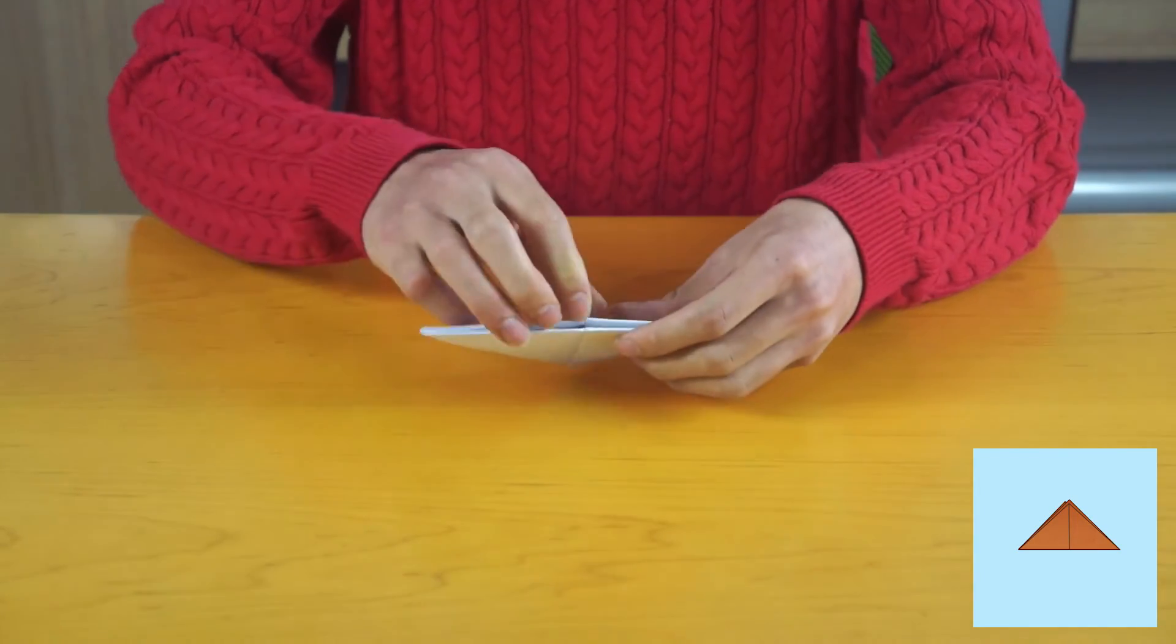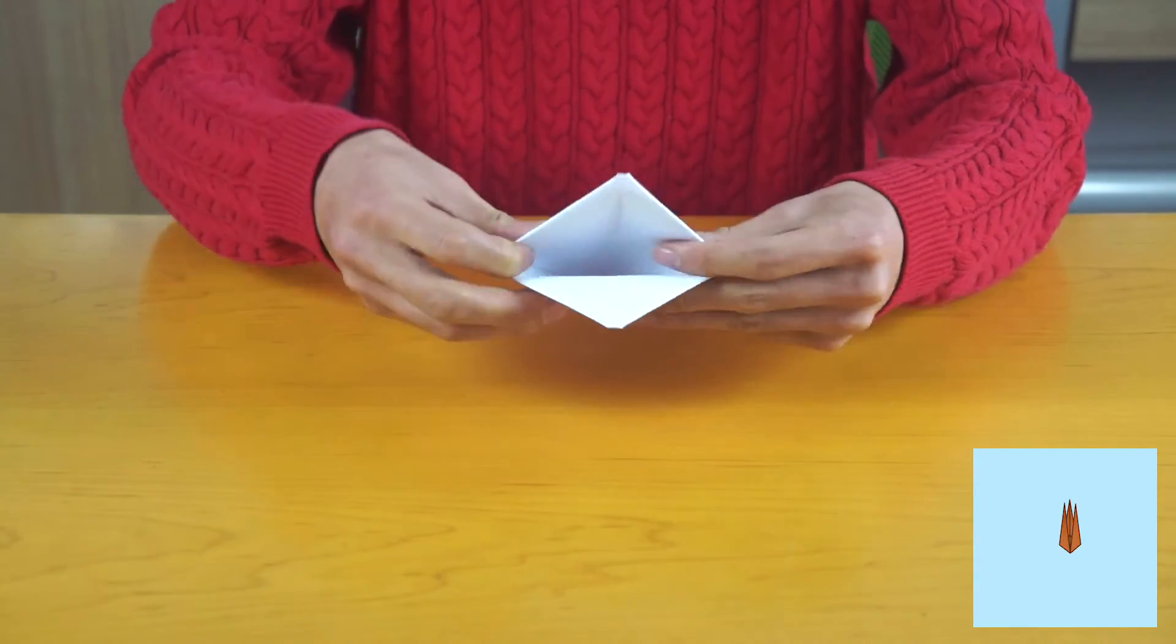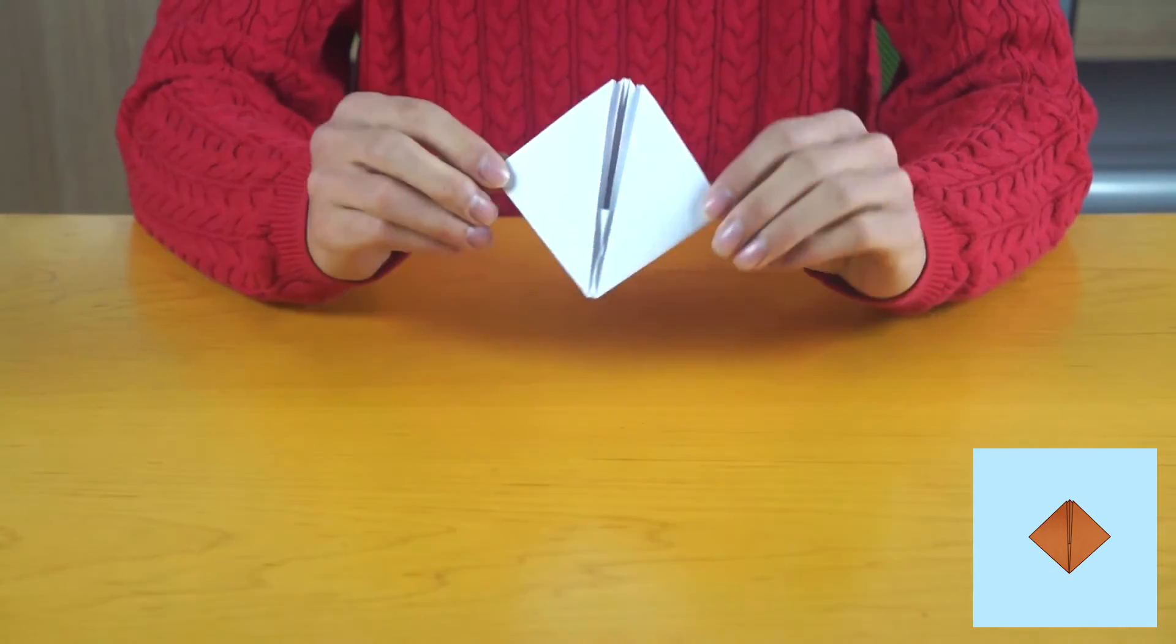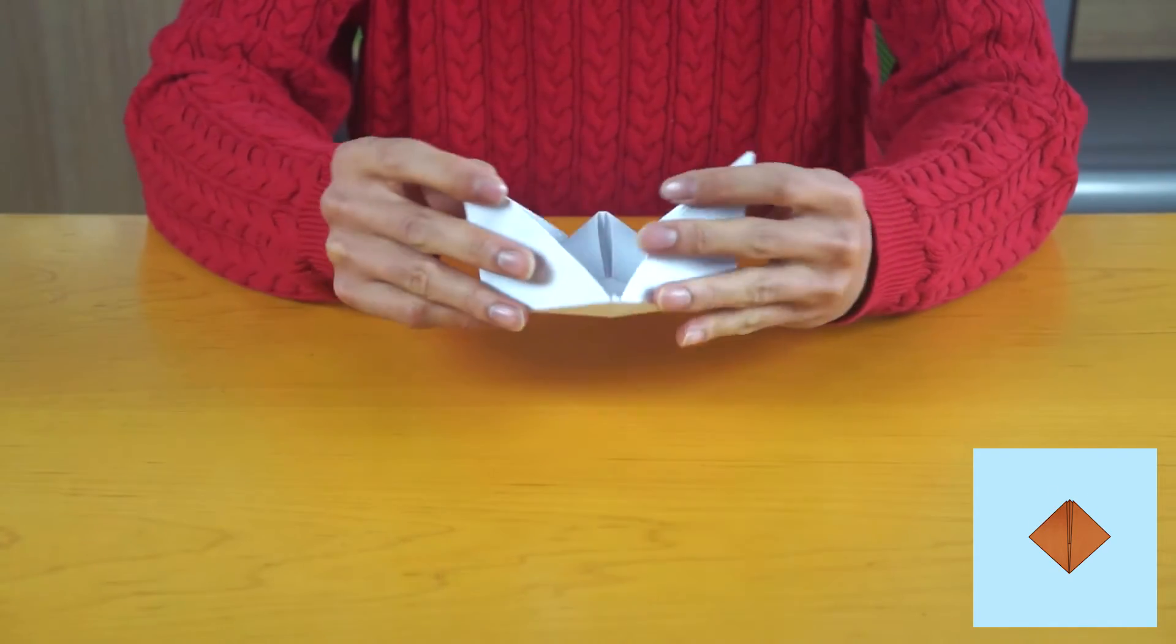Put thumbs in the bottom and open out again so that it's flat, until the paper is a square shape.